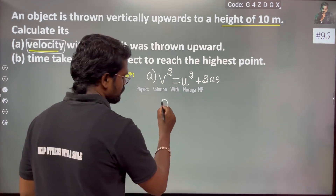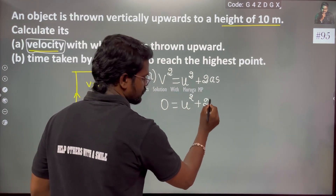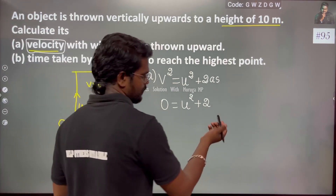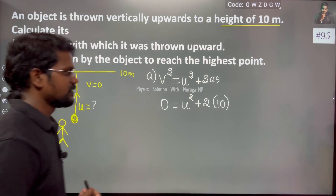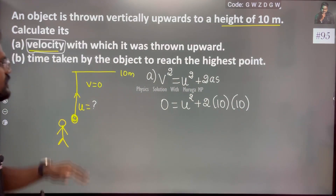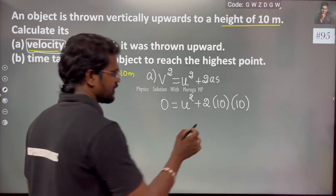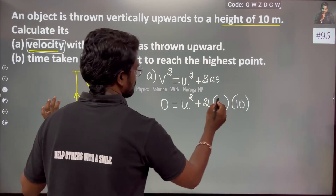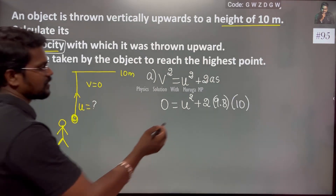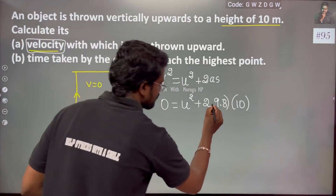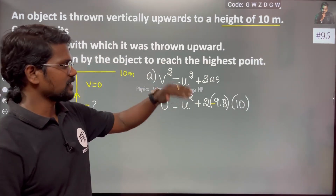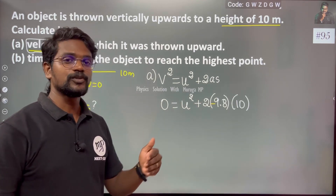Final velocity is 0, so 0 = u² + 2 × a × s. The acceleration is due to gravity acting upward, so a = 9.8 m/s², rounded to 10. And s is the maximum distance, that is 10 meters. So we will take acceleration as 9.8.